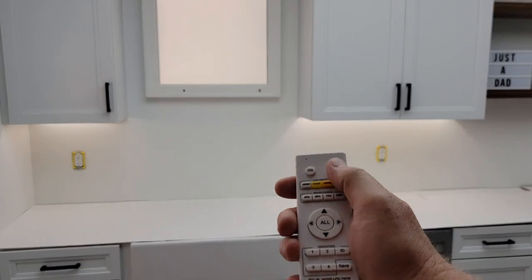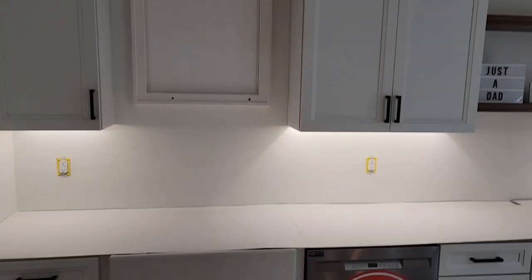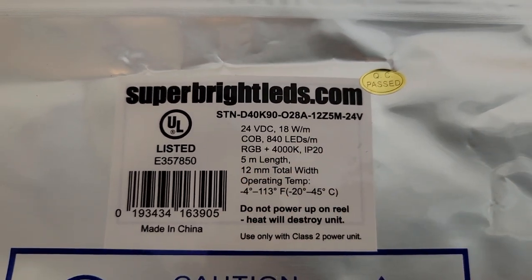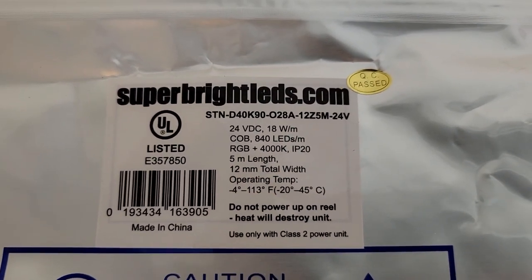So let's hit the all button and let's turn all those lights off. Now let's talk about the under cabinet lights. The under cabinet lights are the COB lights, 4000, they're red, green, blue, plus they're 4000 white.